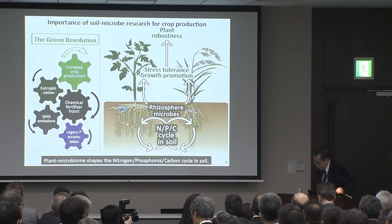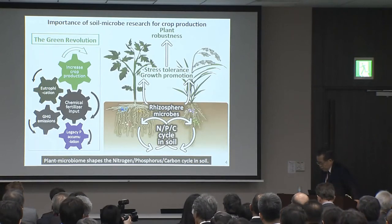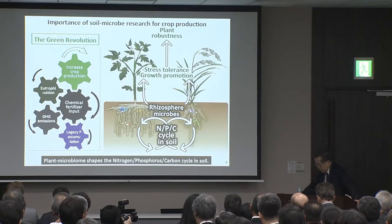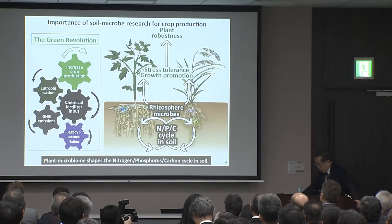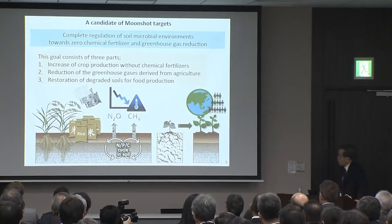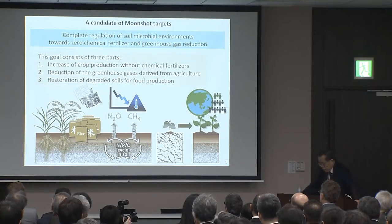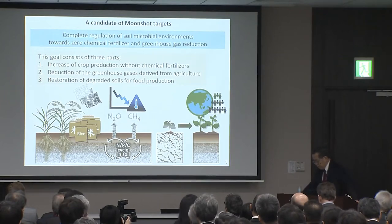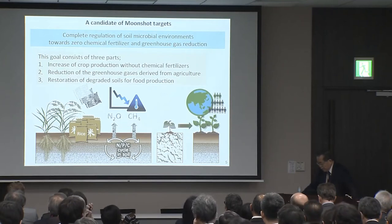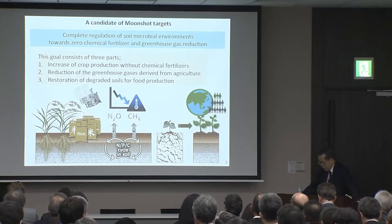A recent study has shown that the rhizosphere microbe plays an important role in nitrogen, phosphorus, and carbon cycles in soil, and is able to confer stress tolerance and growth promotion in plants, eventually leading to plant robustness against future environmental changes. To overcome this serious issue, I would like to propose Moonshot targets: the complete regulation of soil microbial environments towards zero chemical fertilizer and greenhouse gas reduction.